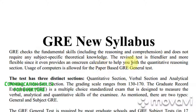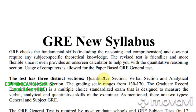It provides an on-screen calculator to help you with quantitative reasoning — earlier it wasn't available but now it does. Use of computers is allowed, and now we have the computer-based test (CBT). The test has three distinct sections: quantitative, verbal, and analytical writing assessment.